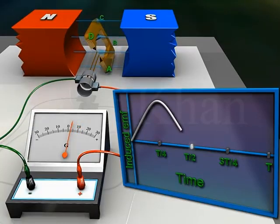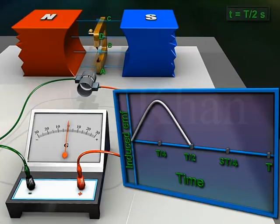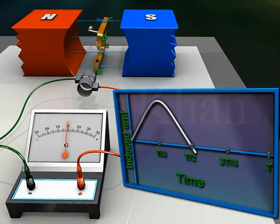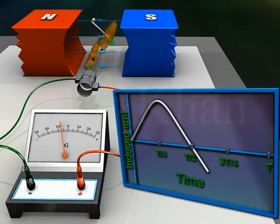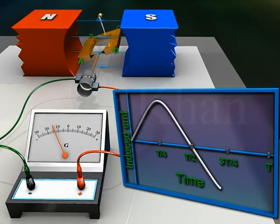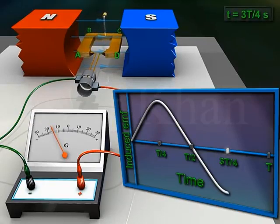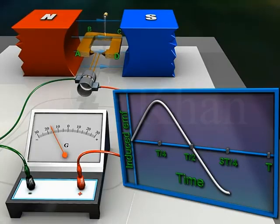At time t/2, the armature again becomes vertical and the induced EMF is zero. During the third quarter rotation, the induced EMF increases but has an opposite polarity compared to the first half rotation. At time 3t/4 seconds, the induced EMF attains its maximum negative value.